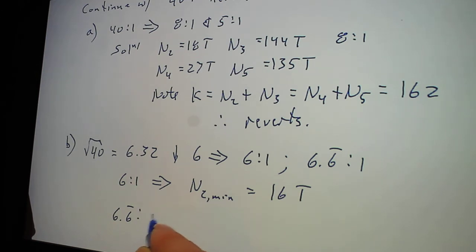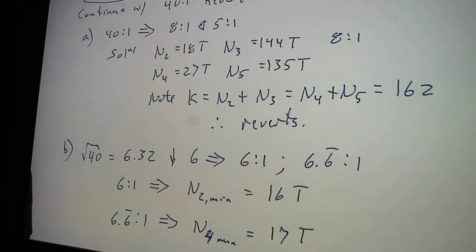But now on this one, with a 6 to 1, 6.6 to 1, I have to jump to the next value up. So N4 min equals 17T. And that's where I left off last time.